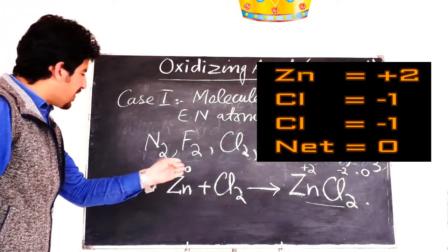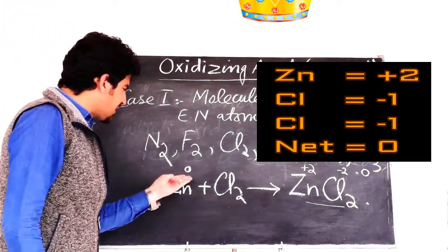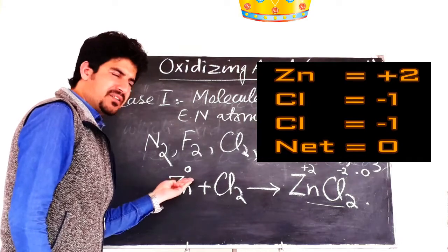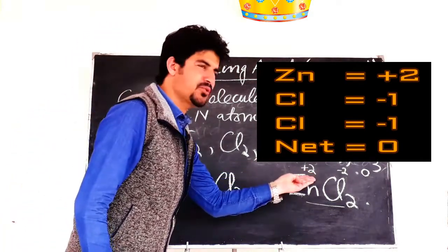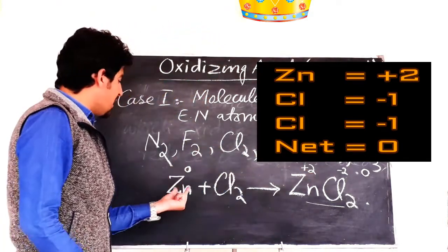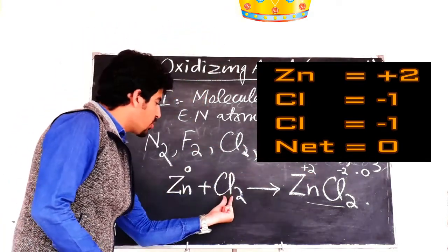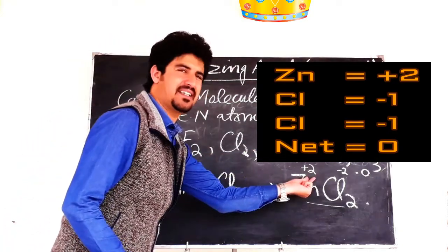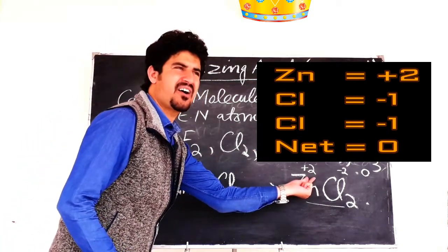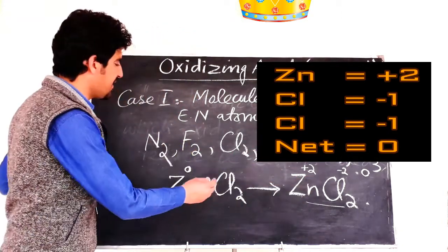So zinc here goes from zero to plus two — zinc is oxidized. And chlorine goes from zero in Cl2 to minus one in ZnCl2 — chlorine is reduced. Such a species is called an oxidizing agent.